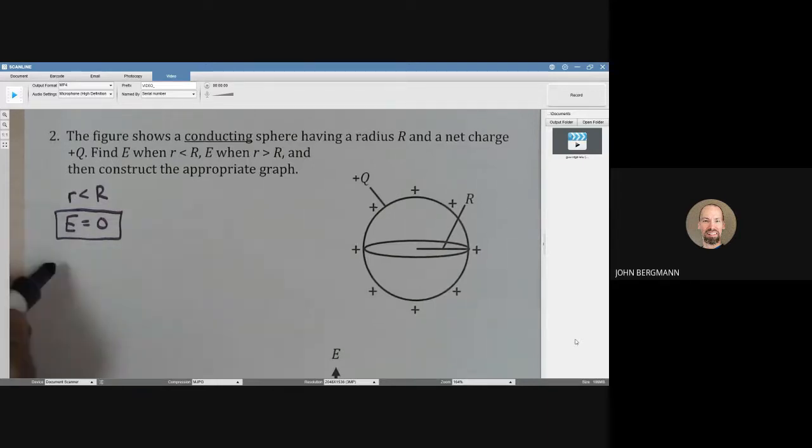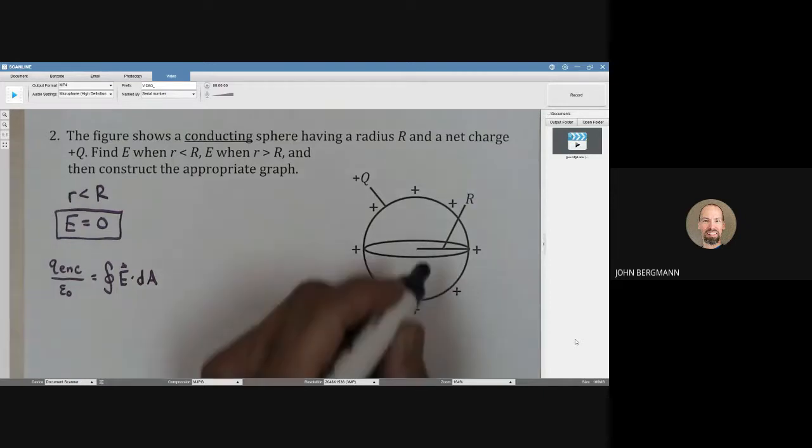Gauss's law, as you recall, says that the charge that's enclosed divided by epsilon naught is equal to the surface integral of E dot dA. And for little r less than big R, that means this.